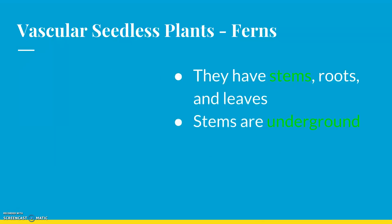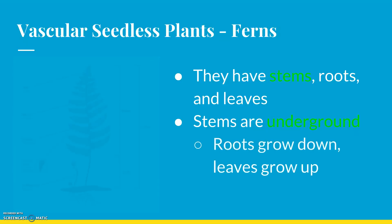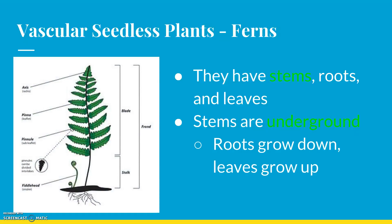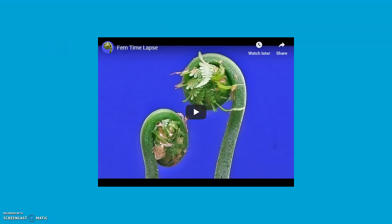Plants in general have stems, roots, and leaves. For ferns, the stems are actually underground — the only thing above ground is just the leaf; everything else is hidden underground. I have ferns out back in my yard and I like to try and pluck them out of the ground — it's actually pretty hard to get them out. I'm going to link a video; if you want to watch it, it shows how ferns unravel and it's pretty cool.